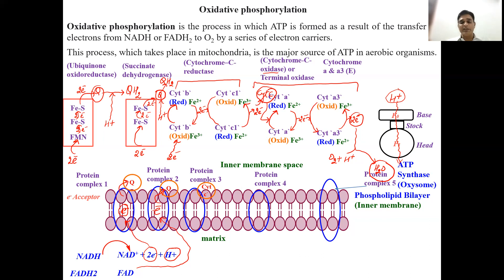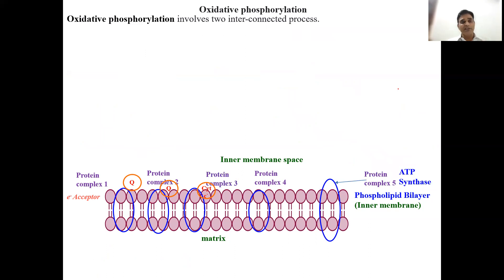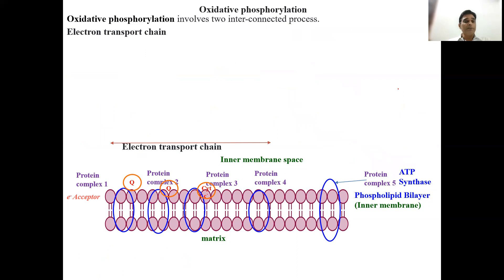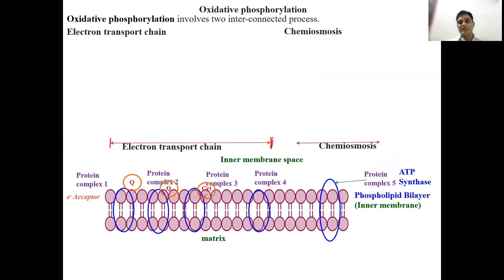To summarize: the electron transport chain runs from Protein Complex I through Protein Complex IV, as shown by the arrow. The chemiosmosis refers to the ATP synthesis through Protein Complex V. NADH gets oxidized to NAD+ plus H+ plus electrons; those electrons are taken by different electron acceptors — the first being ubiquinone oxidoreductase (Complex I). FADH2 gets oxidized and its electrons are taken by Complex II (succinate dehydrogenase).